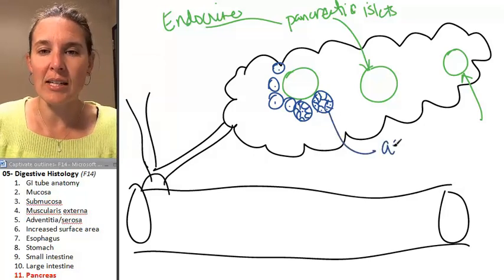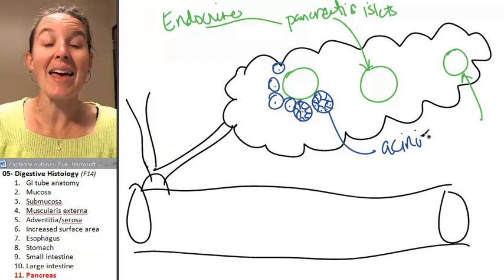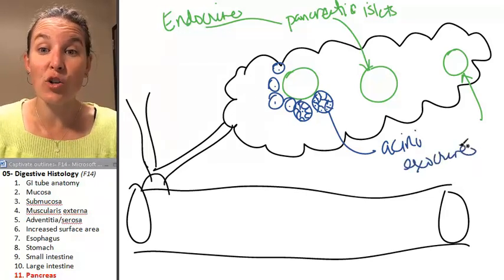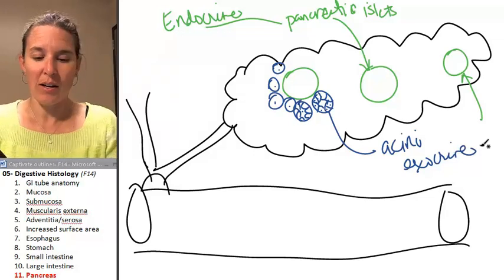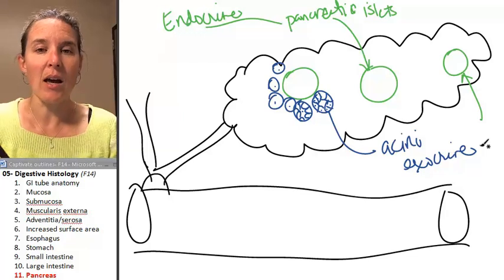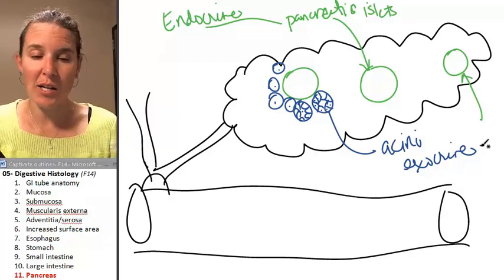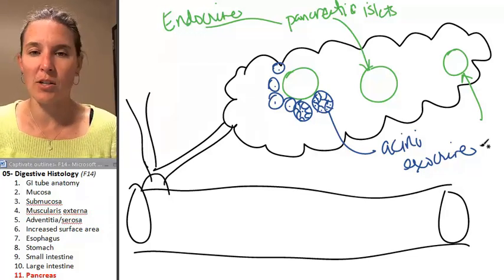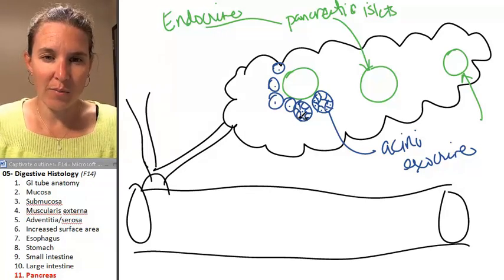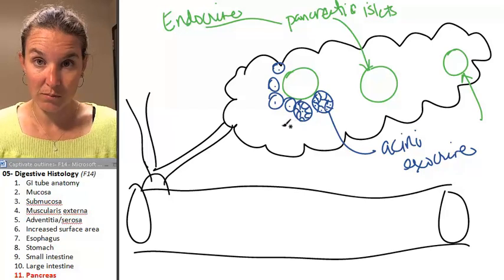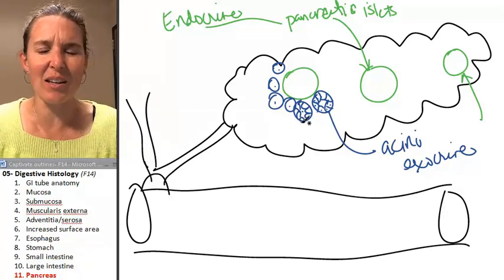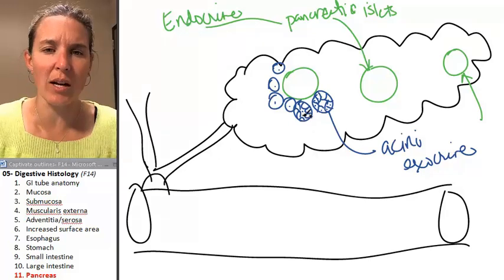These guys are called acini and they're producing the exocrine secretions which are bicarbonate ions to neutralize the stomach acid. They're producing digestive enzymes to help digest proteins and carbohydrates. Do they make fat enzymes too? I don't think so. I think the bile emulsifies the fat and then we just absorb it directly.